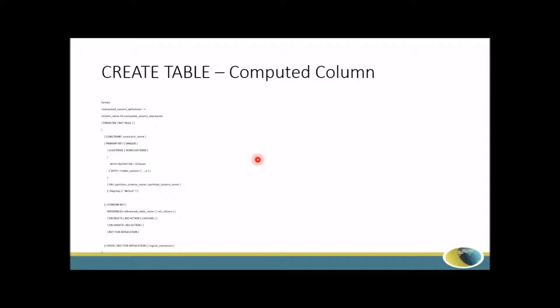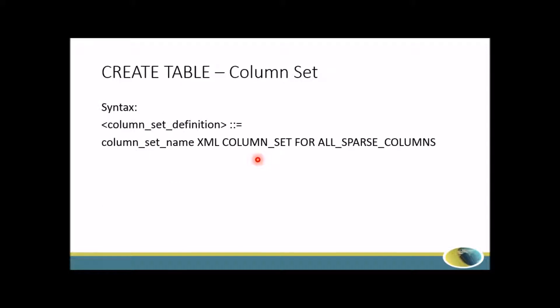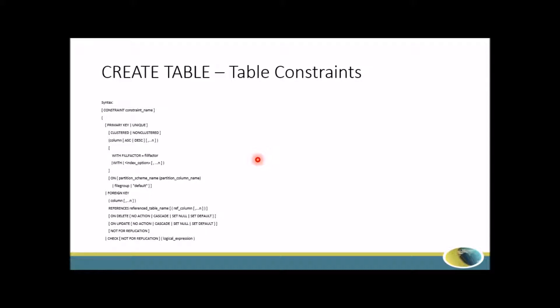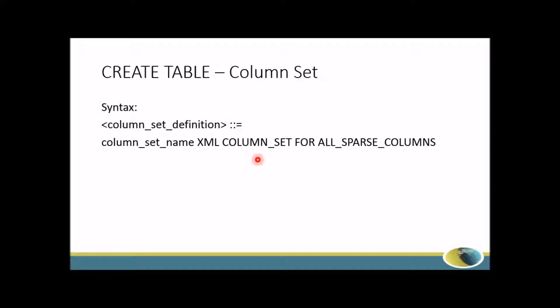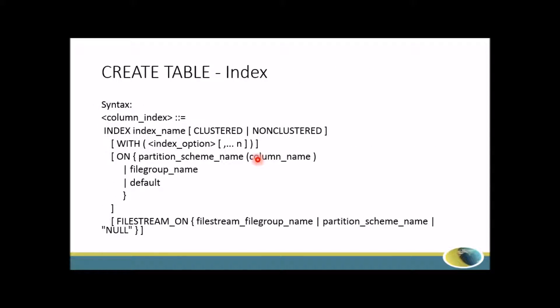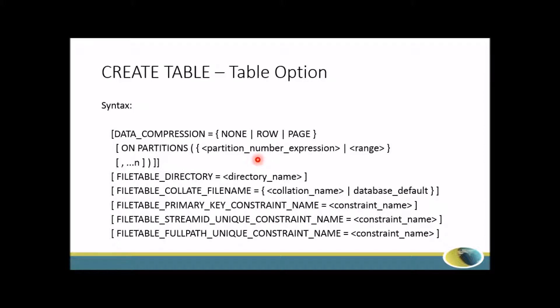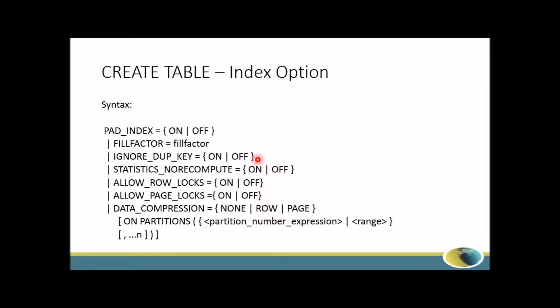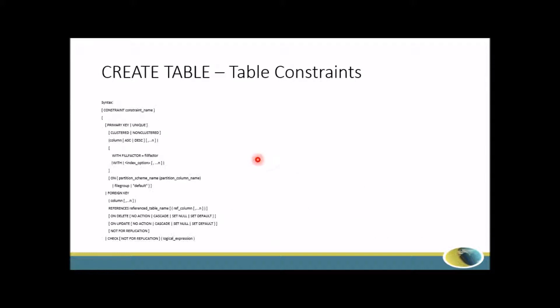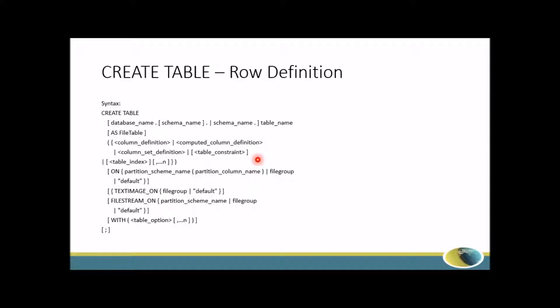I want to deliver a lot on computed columns. The next things are column set and table constraint. Previously, before SQL Server 2012, we had only one type of index, but after SQL Server 2012 we have two types of indexes — I will discuss this in detail in future videos. We also have table options, and the last slide covers index options.